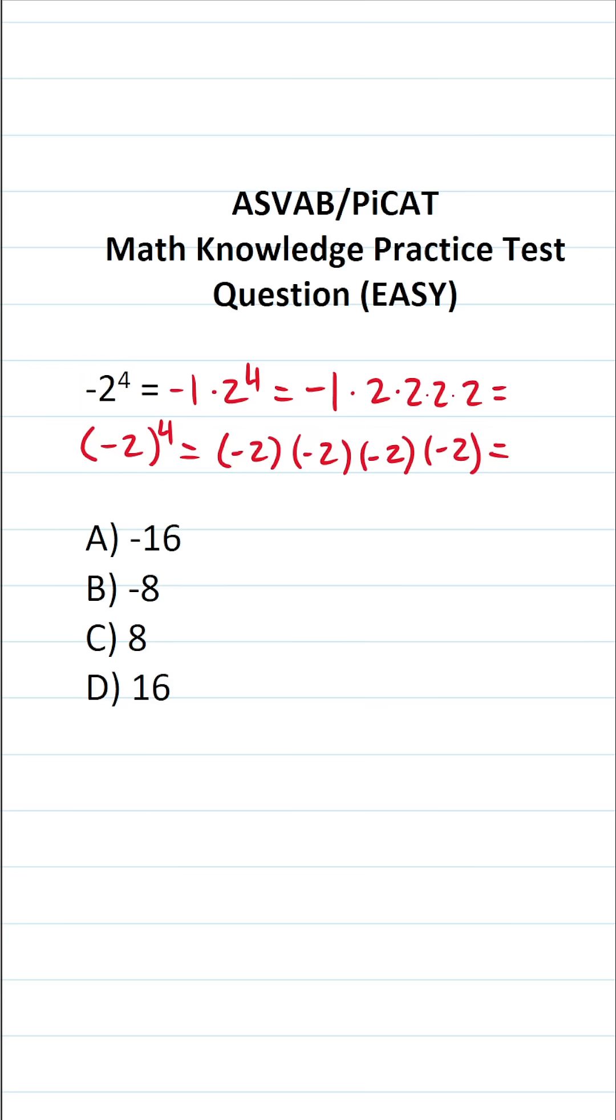What is 2 to the fourth power? It's 2 times 2 which is 4, 4 times 2 is 8, 8 times 2 is 16. So this becomes negative 1 times 16. A negative times a positive is a negative, so negative 1 times positive 16 is negative 16.